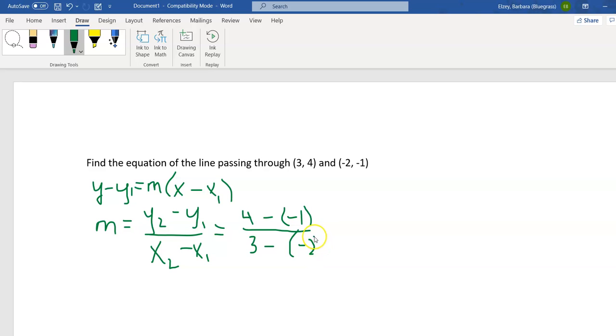Now remember negative negative is really positive, so this is 4 plus 1, or 5, and on the bottom 3 plus 2, or 5, which gives me a slope of 1.